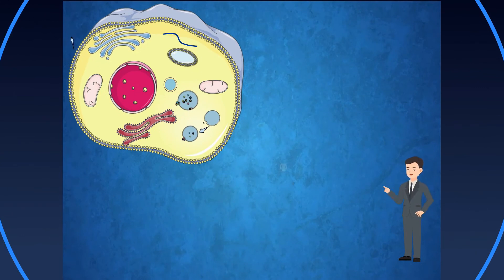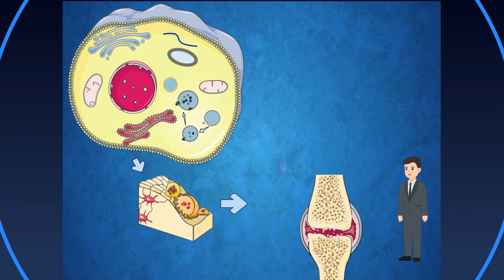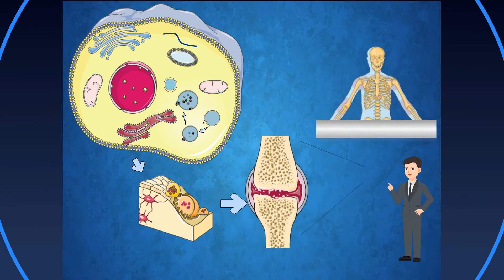Autophagy is a protective pathway to clear damaged organelles and maintain self-homeostasis. Osteoclasts may protect their functions through the autophagy pathway, thereby leading to OA disease.